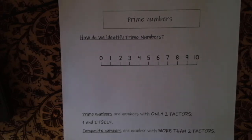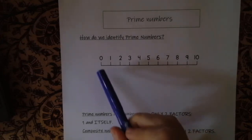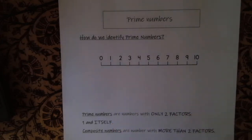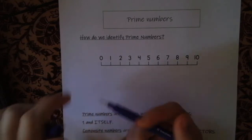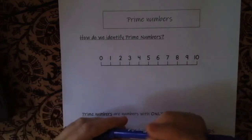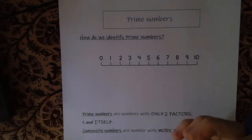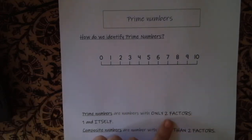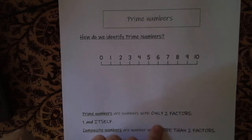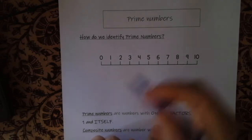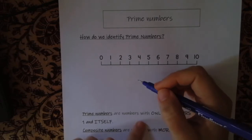All right, so now we've reached the last lesson in the series: prime numbers. How do we identify prime numbers? Prime numbers are numbers with only two factors — one and itself — so only two numbers divide into a number like that.